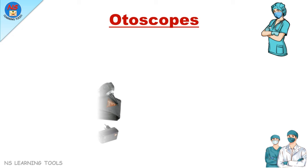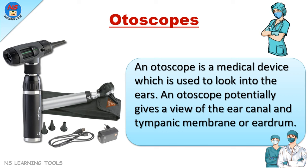Otoscope. An otoscope is a medical device used to look into the ears. An otoscope potentially gives a view of the ear canal and tympanic membrane, or eardrum.